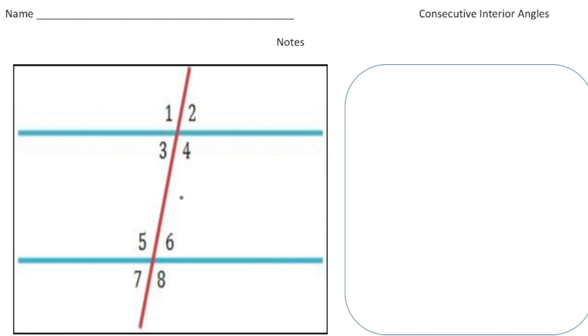When we say same side, we're talking about either to the right or to the left of the transversal. So one pair of same side interior angles would be four and six. We can say angle four and angle six are same side interior, as well as angle three and angle five. So those are two pairs of same side interior angles.